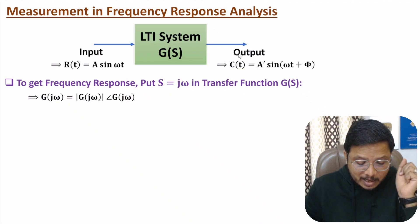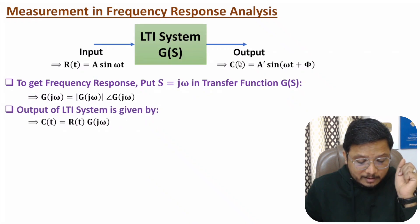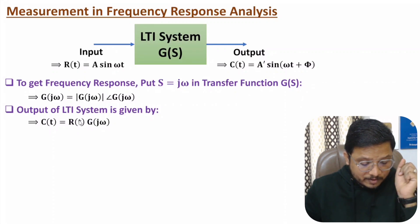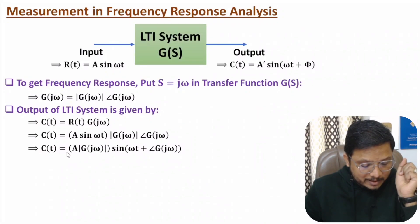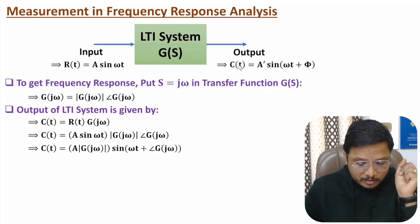Now, the output c(t) — the input to the system is r(t) = A sin(ωt) and the system is G(jω), where G(jω) has magnitude |G(jω)| and angle of G(jω). If you observe, the magnitude of output is A multiplied by |G(jω)|, and with sin(ωt) an additional phase — angle of G(jω) — gets added.